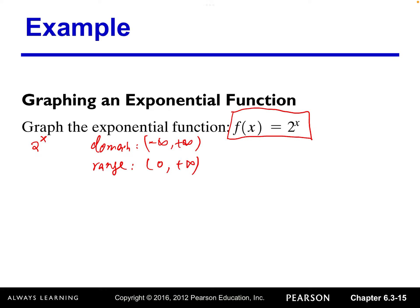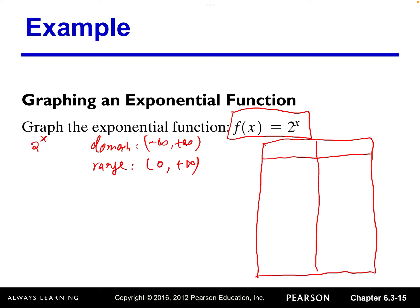The graph of 2 raised to the x power will never intercept the x-axis, so there is no x-intercept. Now let's create a table. We'll pick a few values of x and evaluate y so that we can graph. The x values we'll use are: negative 4, negative 3, negative 2, negative 1, 0, 1, 2, 3, 4.